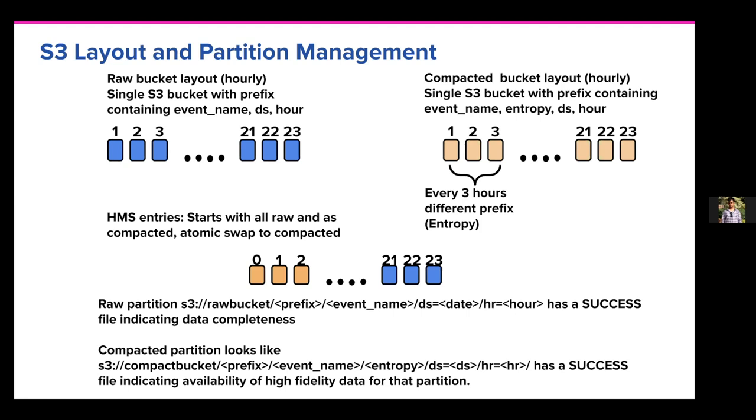A quick note on how downstream DAGs interact with this high-fidelity data using Airflow sensors. Since the deduplication and compaction guarantees are only available after the compactor runs, downstream DAGs use an Airflow sensor we wrote, which determines if a success file for a given compacted partition is present given a DS and HR partition spec before continuing. Since S3 is our persistent storage choice, the sensor uses the S3 Boto API to check for the presence of success files.